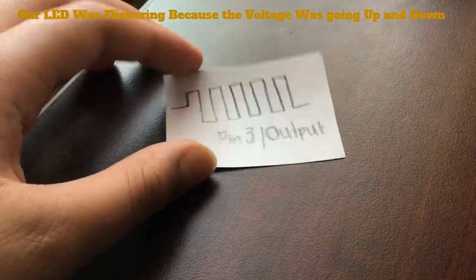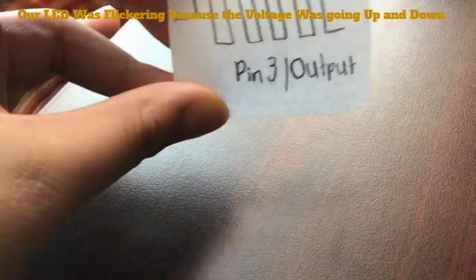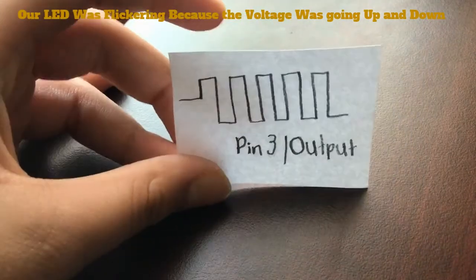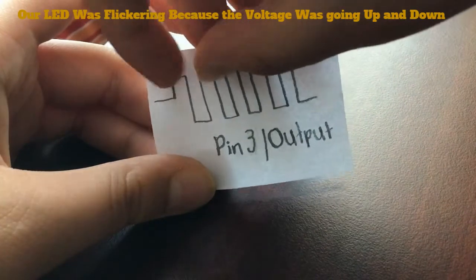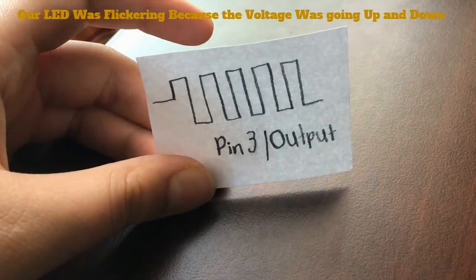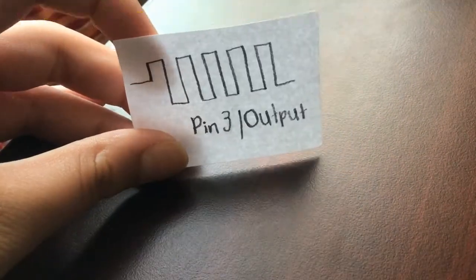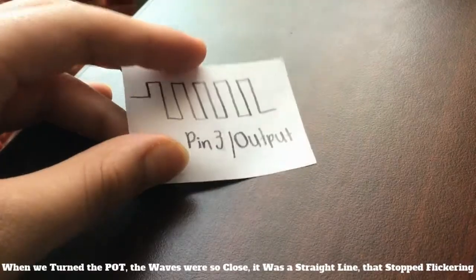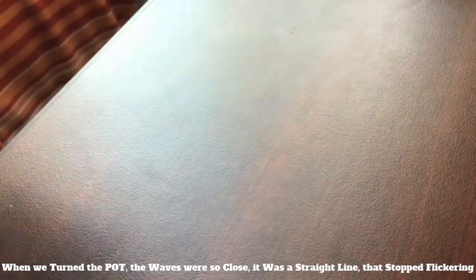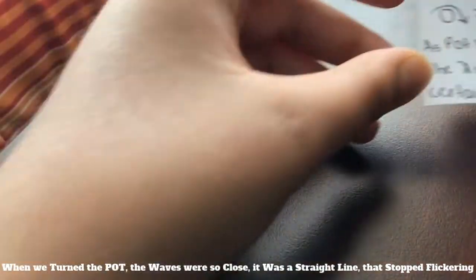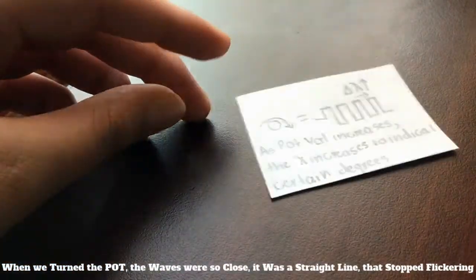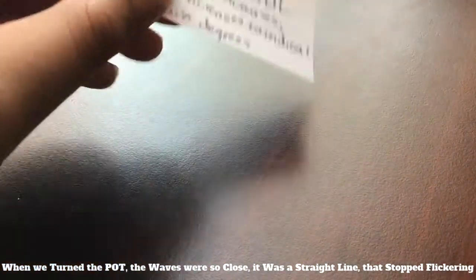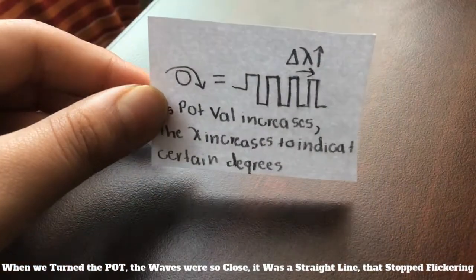How this works is our circuit generates PWM signals or waves. They are like square waves and they go from minimum voltage to maximum. They keep switching off like a square. This generates a square wave which the servo motor uses to turn a certain amount of degrees.